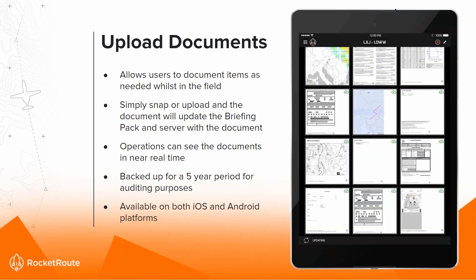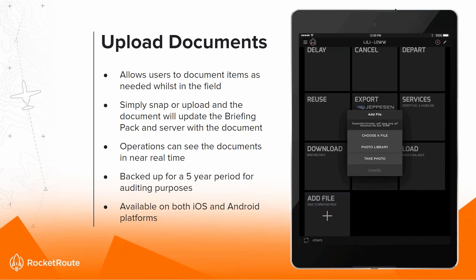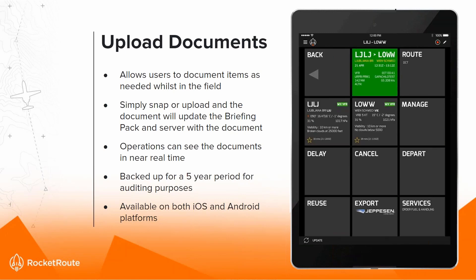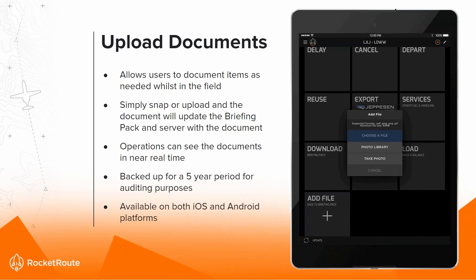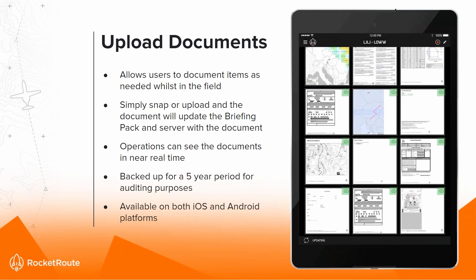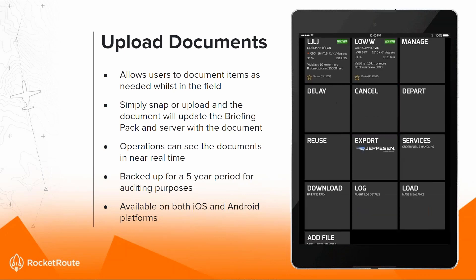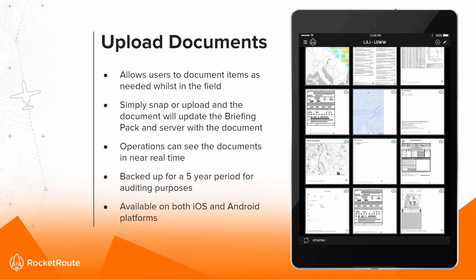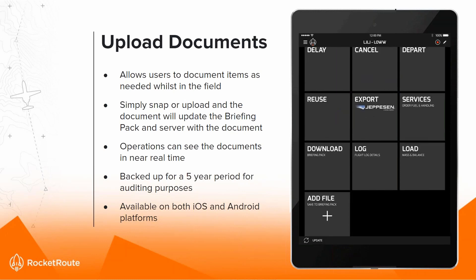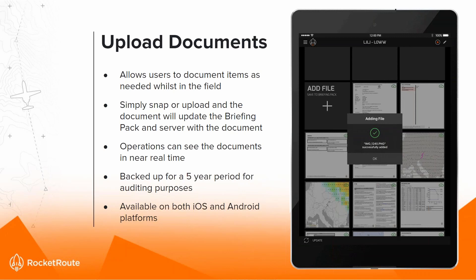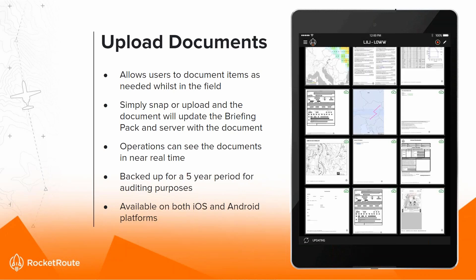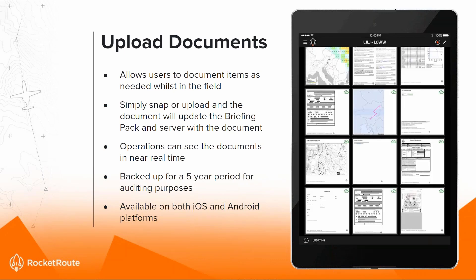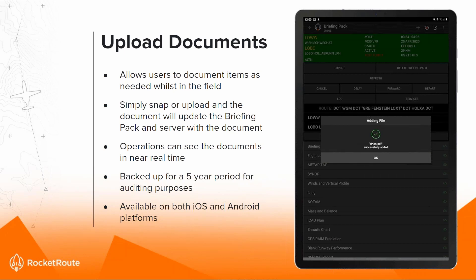Another great update released last week is the Upload Documents function on mobile applications. This has been a useful feature for years on the website and is now available on mobile. Users can add documents as required — simply snap a photograph or upload the document and the briefing pack updates. Operations can see documentation added in near real time as it's automatically added to the cloud and to the briefing pack. On a business account this is automatically backed up for five years for auditing purposes, making photos of fuel releases or receipts easily auditable. This is available on both iOS and Android platforms.